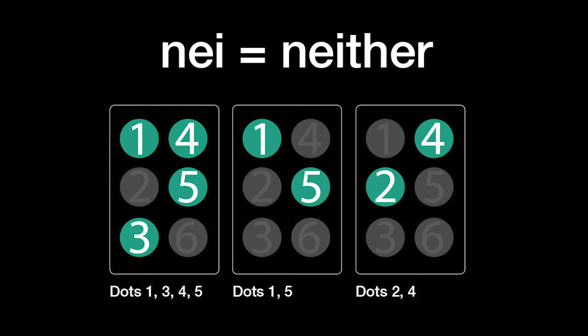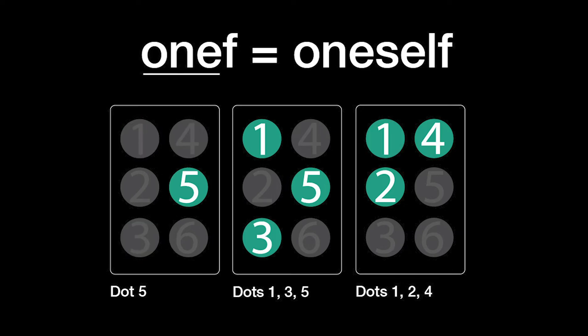Neither is N-E-I: dots 1, 3, 4, and 5, plus dots 1 and 5, plus dots 2 and 4. Oneself is 1 plus F: dot 5, plus dots 1, 3, and 5, plus dots 1, 2, and 4.